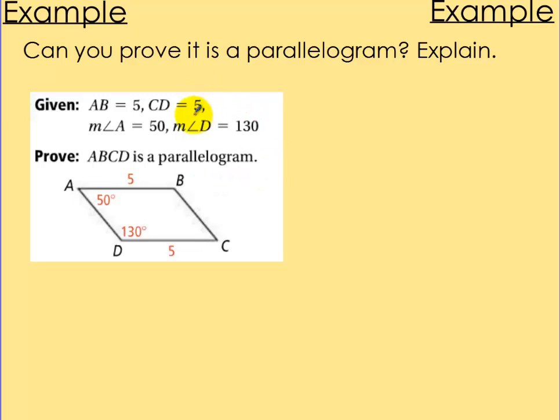So once again, how can I prove this is a parallelogram? Well, we have AB is going to be congruent to DC because they're the same length. So we can say those sides are congruent. Well, since angle A is 50 and angle D is 130,